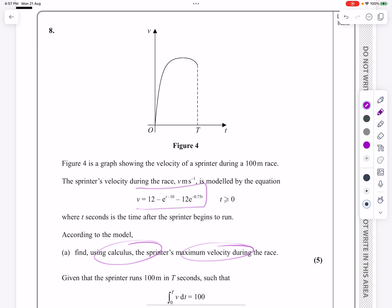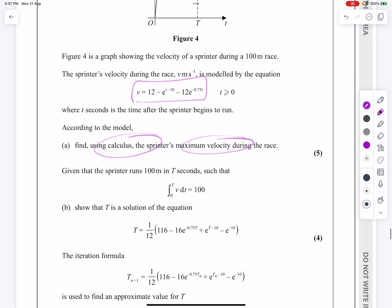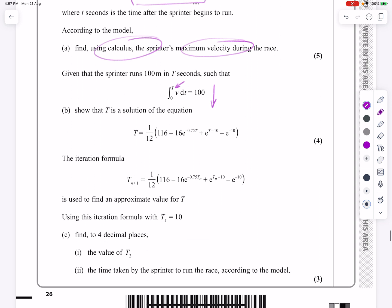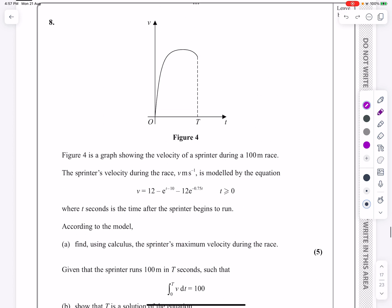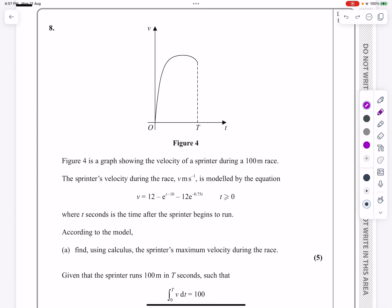Well, that's going to be dv by dt equals 0, so we're going to be differentiating. We then need to do some work on integrating v and trying to work out what this t is, and finally we finish off with some iterative formulae from the numerical methods, a little bit of fixed point iteration right at the very end. So let's go back and make a start to all of that. Let's just read through it.